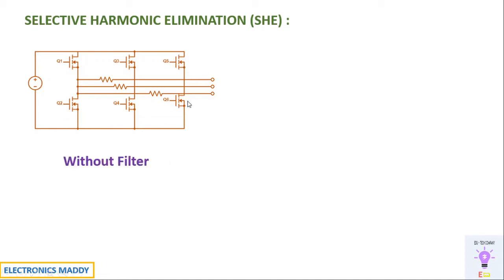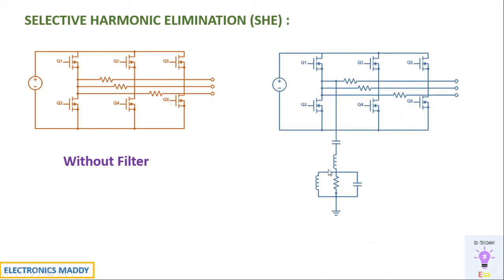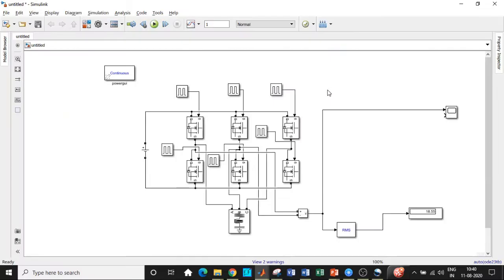This is a circuit diagram without a filter. What we'll be doing is adding a filter — this is a double-tuned filter connected across phase A, and similarly it should be connected across phases B and C. One of the most advanced features available in MATLAB is a block called 'Harmonic Filter,' where you can directly set the particular harmonic that needs to be eliminated. I'll be demonstrating that in MATLAB.